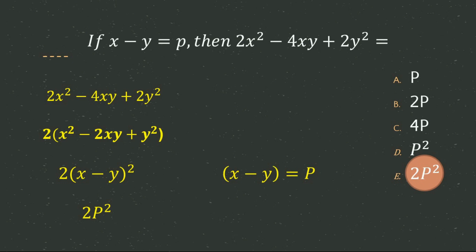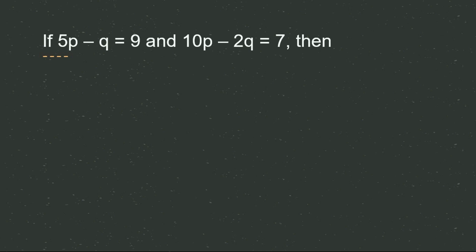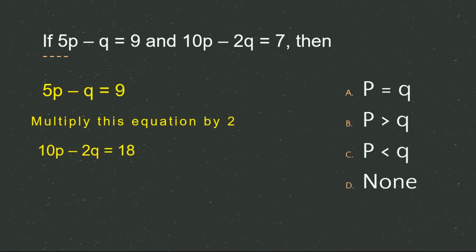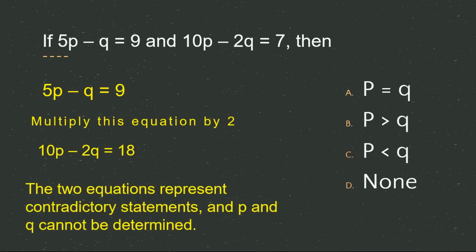The next question: if 5p − q = 9 and 10p − 2q = 7, which of the following is correct? If you multiply the first equation by 2, you get 10p − 2q = 18. But the second equation says 10p − 2q = 7. The left sides are equal but the right sides differ, so these are contradictory statements and p and q cannot be determined. D option is the correct answer.